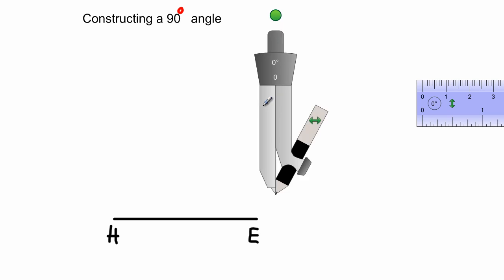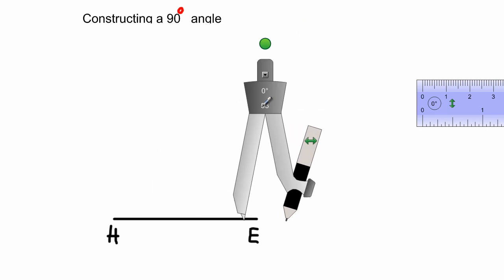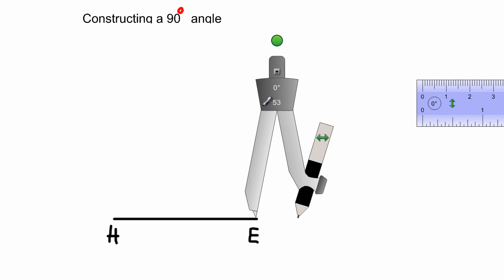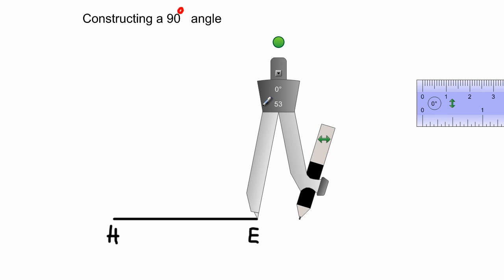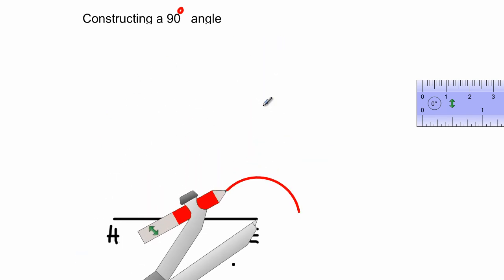It doesn't really matter how wide or to what radius you open your compass. I'm going to place it at E. Let's say we're asked to construct the 90 degree angle at the point E. I'm going to be using red lines to indicate my construction lines. I'm going to swing an arc from this side and touch my line segment HE.